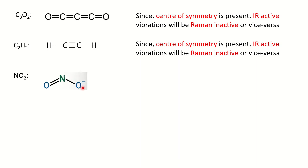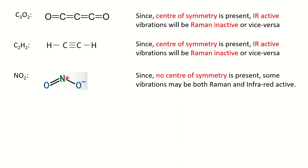For NO2, it is a bent molecule. You can see, due to the lone pair of electrons on nitrogen, it is bent in shape. The center is nitrogen, but if you move from the center towards one oxygen, on the opposite side at the same distance there is no atom present. Similarly for the other oxygen, moving in one direction, the opposite side has no atom. So we can say NO2 does not possess a center of symmetry, meaning some vibrations will be both Raman and IR active.